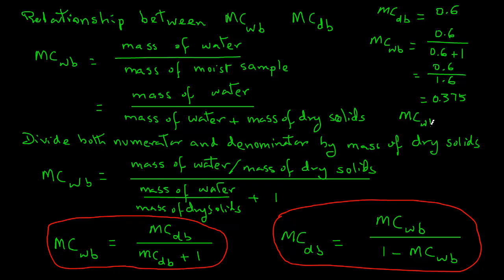That means moisture content wet basis is 0.375 times 100, which gives us 37.5%. So moisture content dry basis of 60% equals moisture content wet basis of 37.5%. These two equations are very useful in converting moisture content from one basis to another.